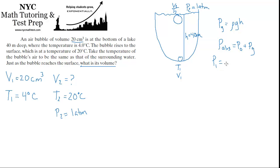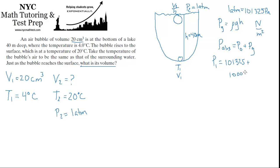The units will be Pascals, so let's convert: 1 atmosphere = 101,325 Pascals. We need P1 = 101,325 Pa plus ρgh. The density of water is 1000 kg/m³, g = 9.81 m/s², and h = 40 meters.